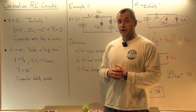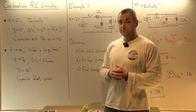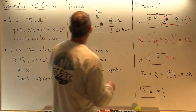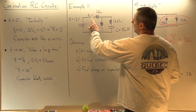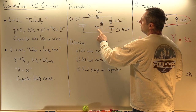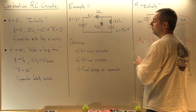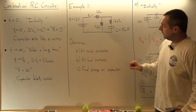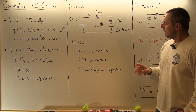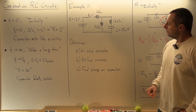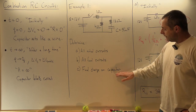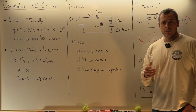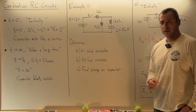Let's do one example. Here's our circuit: we've got a voltage source, a switch, and then a 1-ohm resistor, a 4-ohm, a 12-ohm, and then the capacitor. What we want to do is determine all the initial currents at the beginning, all the final currents when the capacitor is full, and then the final charge on the capacitor.